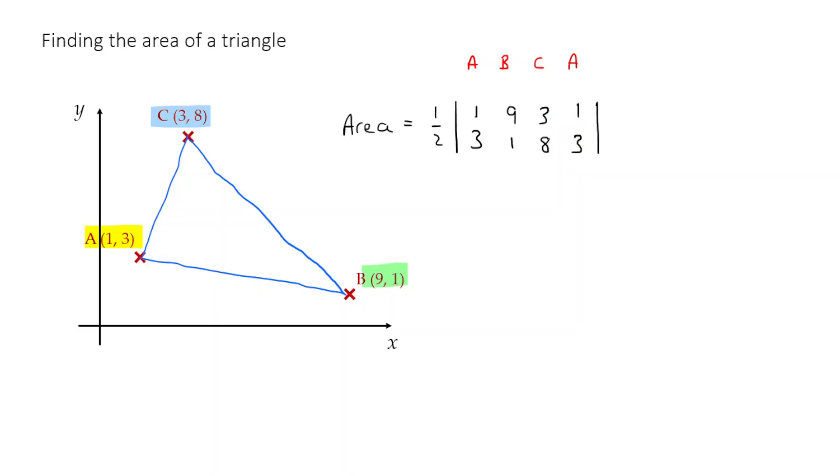What we're going to do is we're going to do something called the shoelace method. And what that involves is I'm going to take these diagonals here. These diagonal, this diagonal, and this diagonal. I'm going to multiply those numbers together. So I'm going to take one times one plus nine times eight plus three times three.